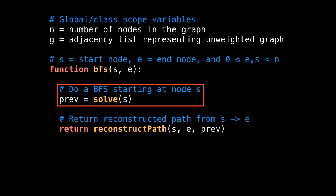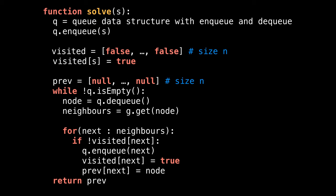So here we are inside the solve method. The first thing I do is initialize the queue data structure that we'll need and add the starting node to it. This queue should support at minimum the enqueue and dequeue operations I just talked about. Then initialize a Boolean array with all false values and mark the starting node as visited.